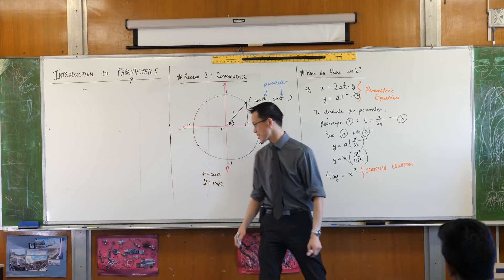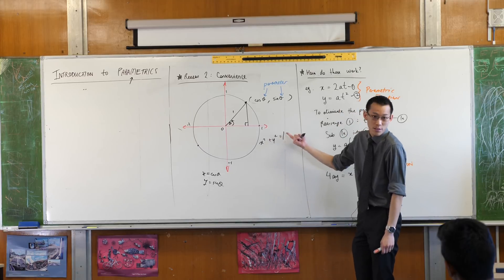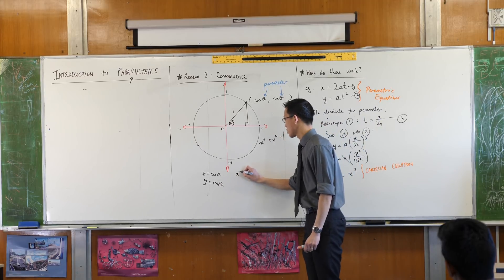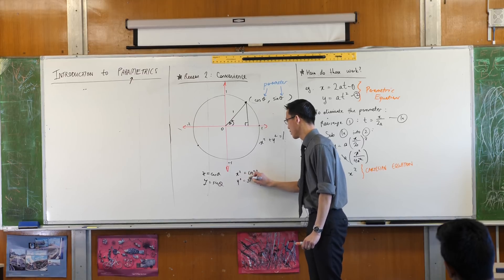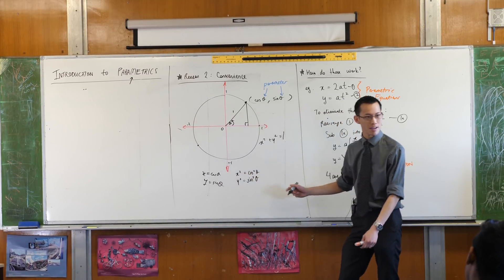All I would do is I would square this and square this. I'm gonna have to square them, right? So x² will be cos² θ, y² will be sin² θ. Now what do I do with those?